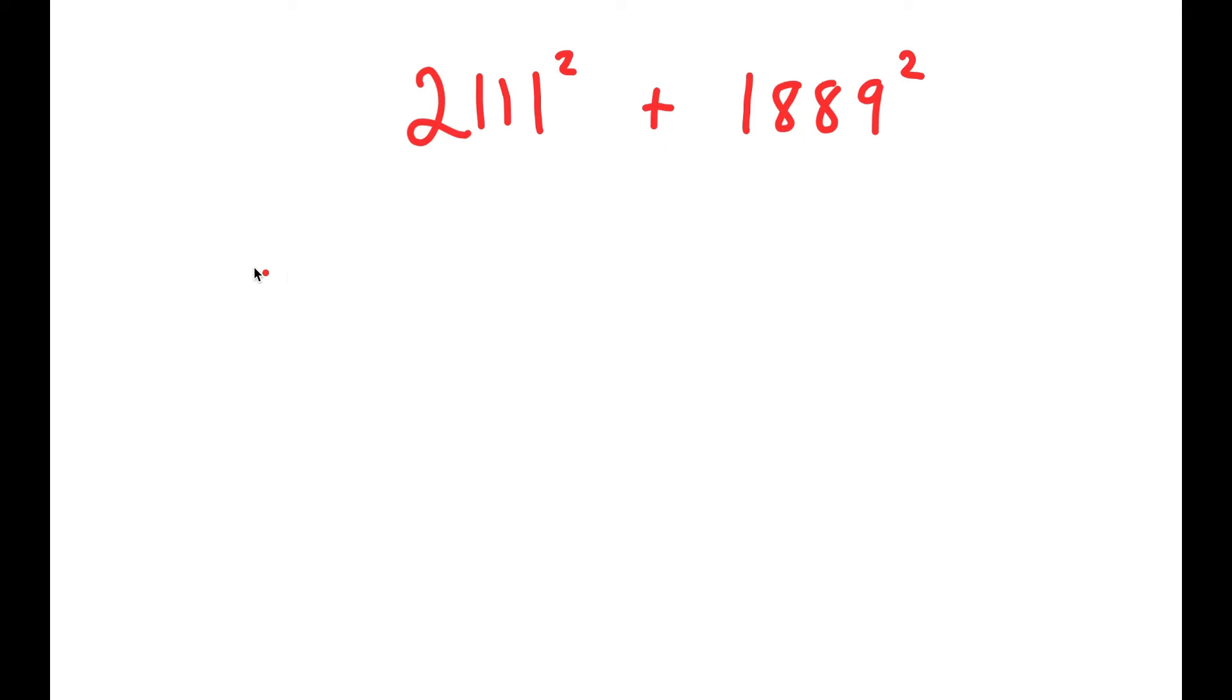So to solve this, I'm going to first rewrite this as 2,000 plus 111 squared plus 2,000 minus 111 squared, because 1,889 is 2,000 minus 111 and 2,111 is 2,000 plus 111.